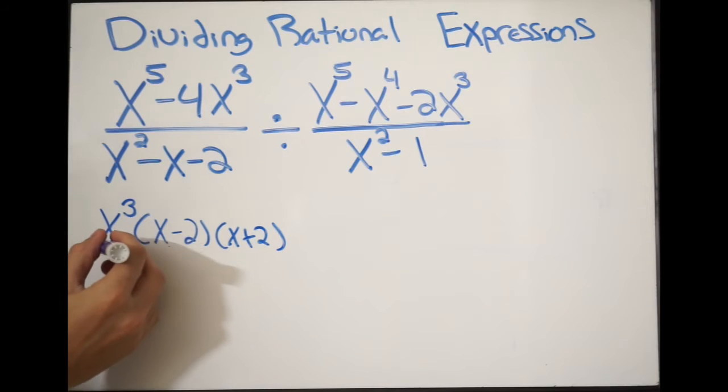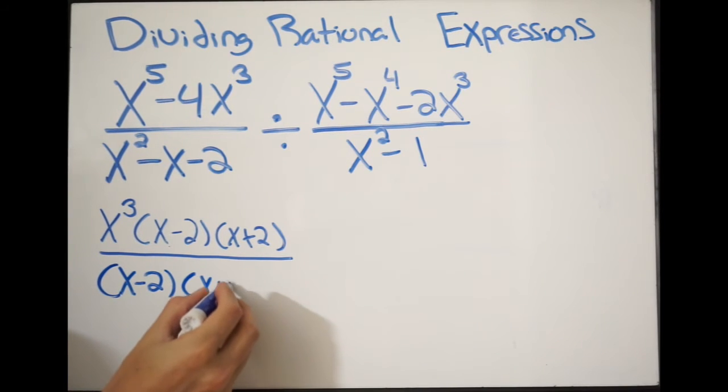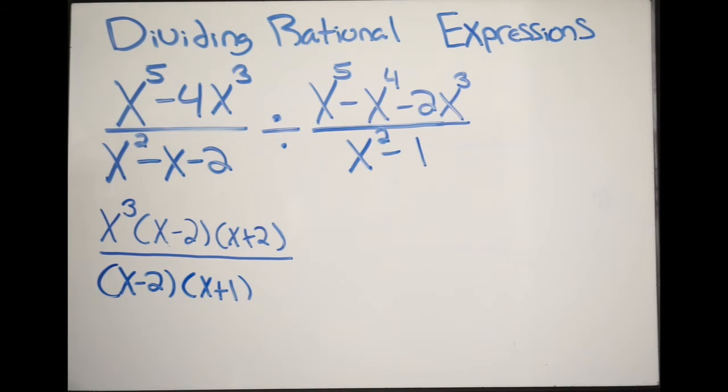Let's go ahead and do the denominator. Make sure you watch those videos using the AC method if you're unaware of how to factor. Doing this out, we're going to get x minus 2 times x plus 1. I just factored the quadratic here on my denominator.